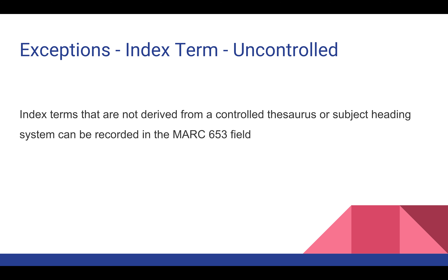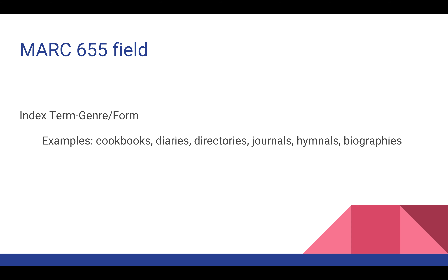There are some exceptions with subject headings: if you cannot find an appropriate subject heading that matches your work, you can add terms to the 653 field in the MARC record. Please do not make up subject headings because they're not authorized — this is the place to put a term not derived from a controlled thesaurus or subject heading system. The other field worth mentioning is the index term or genre form field. People get confused about what to do with cookbooks or diaries or directories. The overarching term for the item goes in the genre form field, while inside subject terms describe what the book is about. For a cookbook about desserts, you would subdivide into cookies, chocolate, pies in your 650 field.